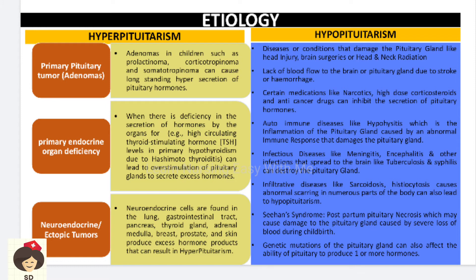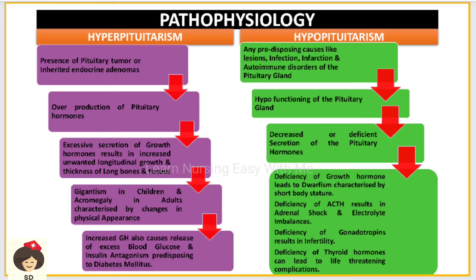Sheehan's syndrome occurs in mothers after delivery due to excessive blood loss, causing the pituitary gland to not receive adequate blood supply, leading to necrosis — postpartum pituitary necrosis — resulting in hypopituitarism. Genetic mutations of the pituitary gland, where there is a chromosomal abnormality, can prevent the pituitary from producing one or more hormones. All these conditions can result in hypopituitarism.